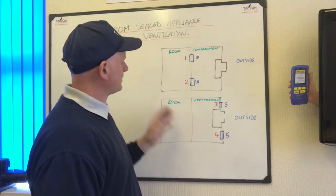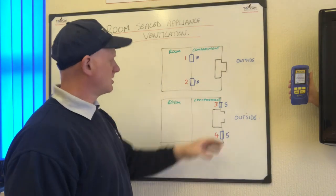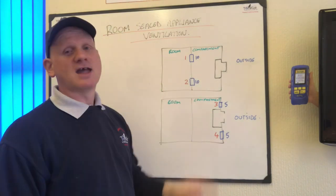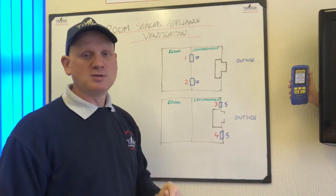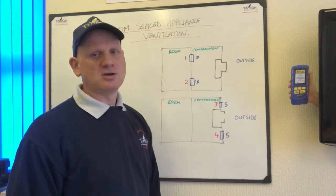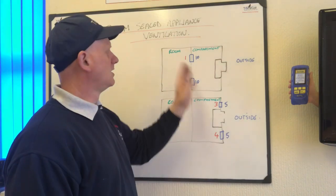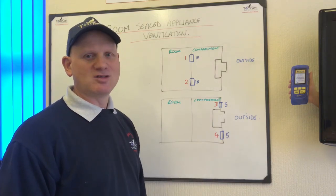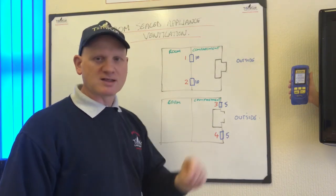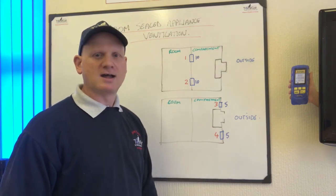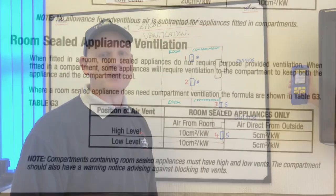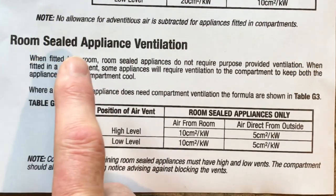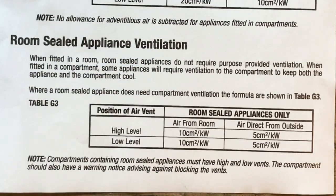This is the drawing we're going to be looking at: a room sealed cast iron balanced flued boiler in a compartment, with the vents going into a room. Let's have a look at the chart — this is room sealed appliance ventilation in a compartment.